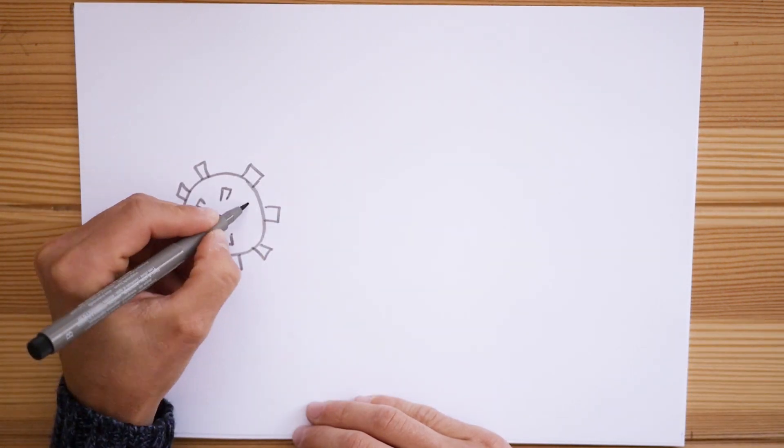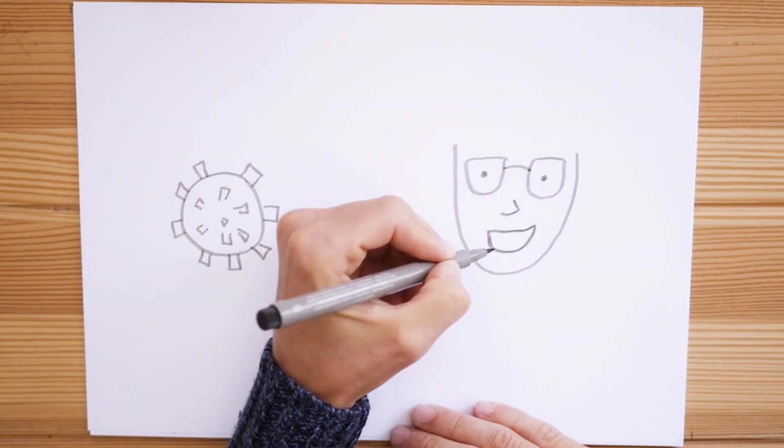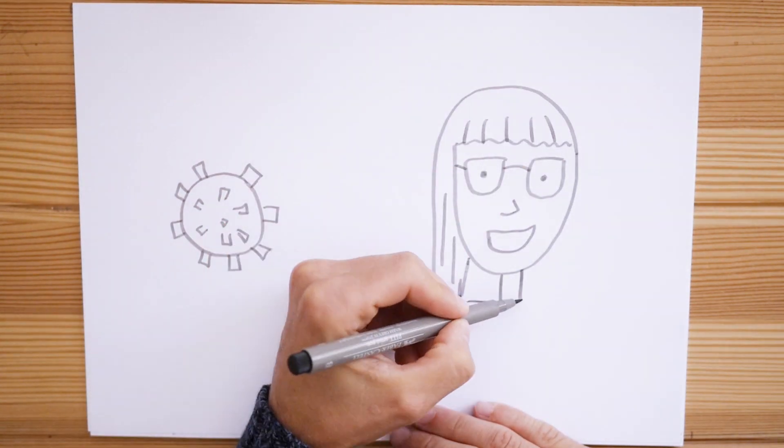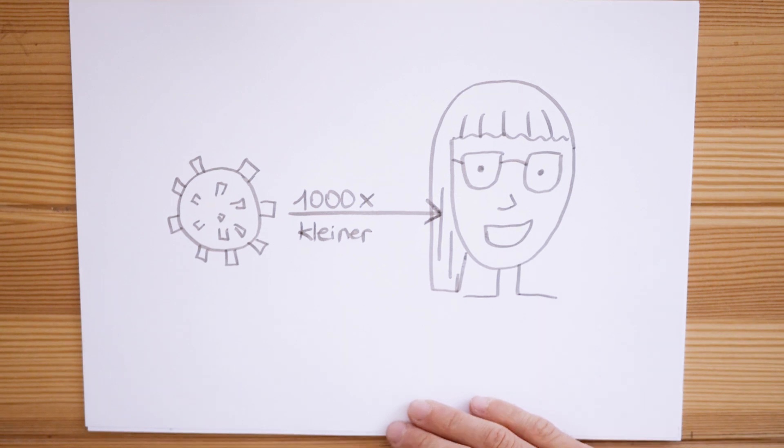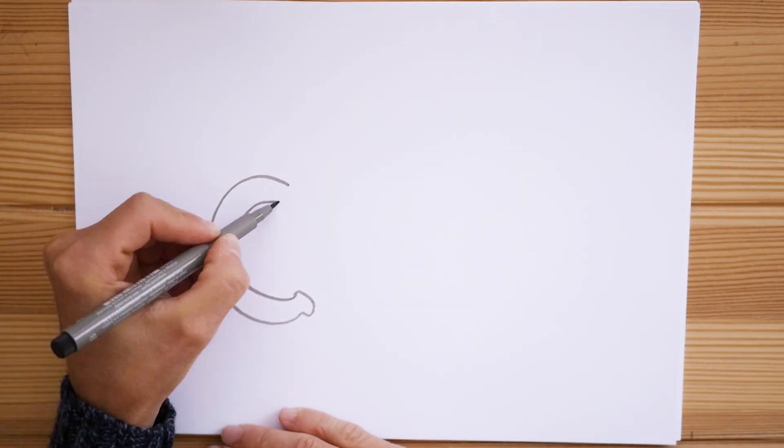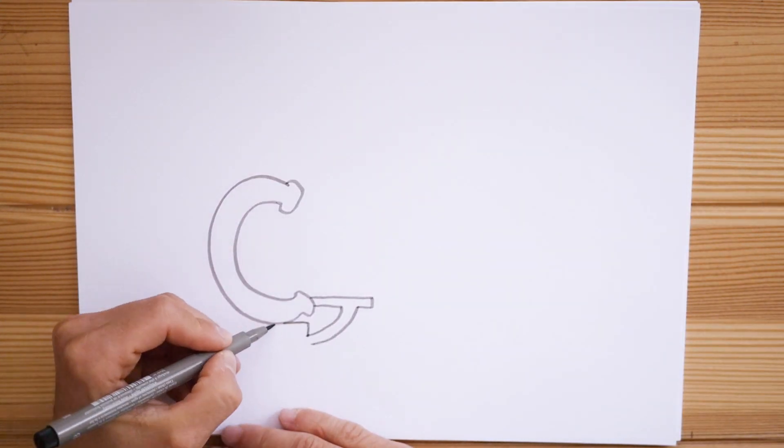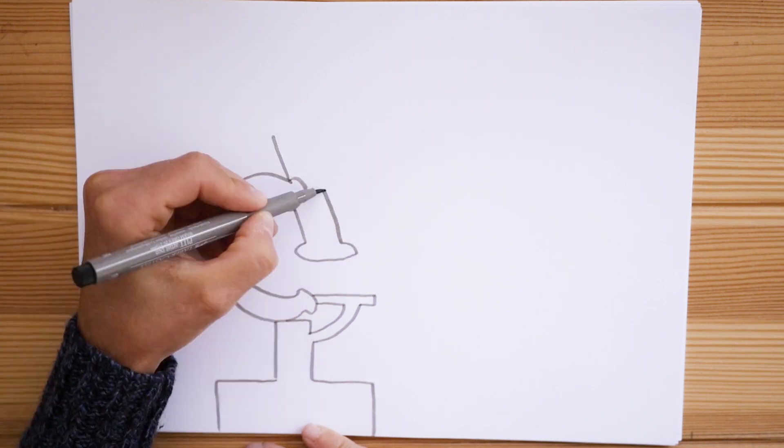Viruses are very small. The coronavirus is about a thousand times smaller than the thickness of a single hair. Hard to imagine, right? That's why they aren't visible with the naked eye. Physicians need special microscopes to actually see them.